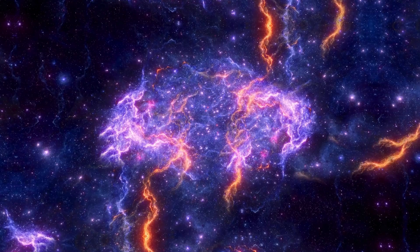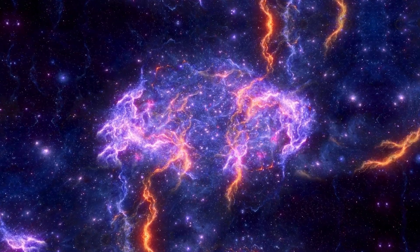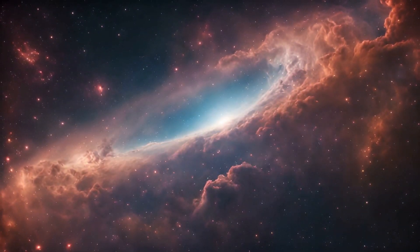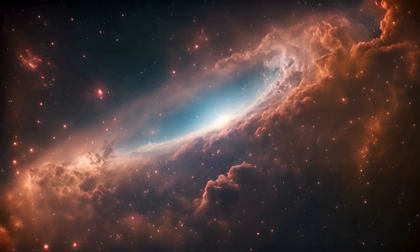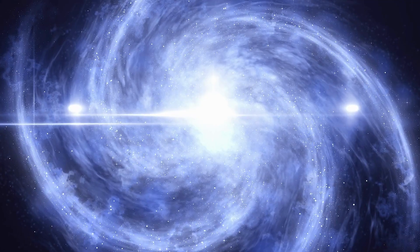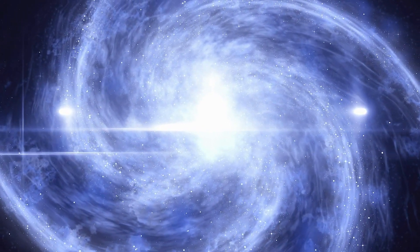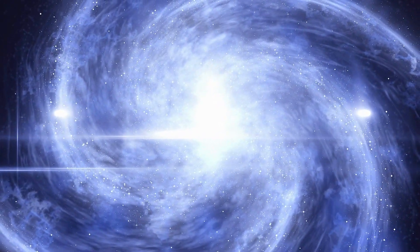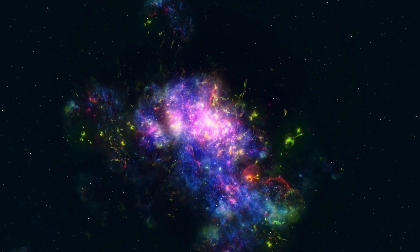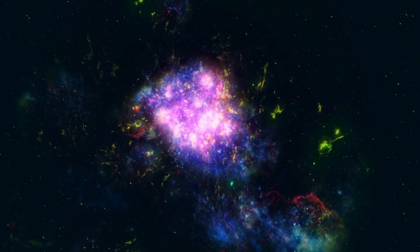Since the Great Dimming, Betelgeuse has exhibited altered behavior in terms of its light and radial velocity. Despite its unpredictable behavior, Betelgeuse remains a massive red supergiant star undergoing the final stages of rapid evolution. When it exhausts its fuel, the core will collapse under its enormous mass, resulting in a supernova explosion that could outshine entire galaxies.